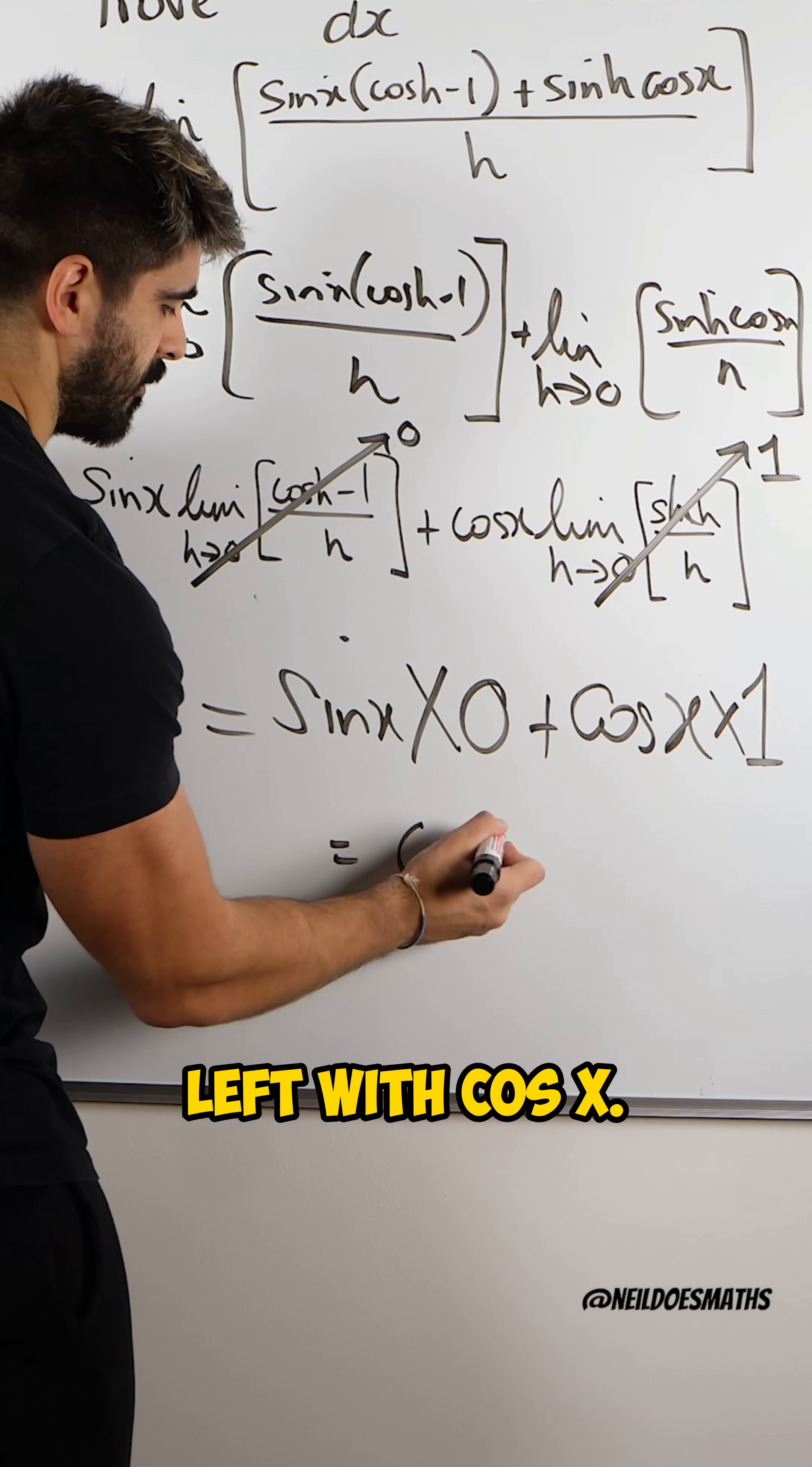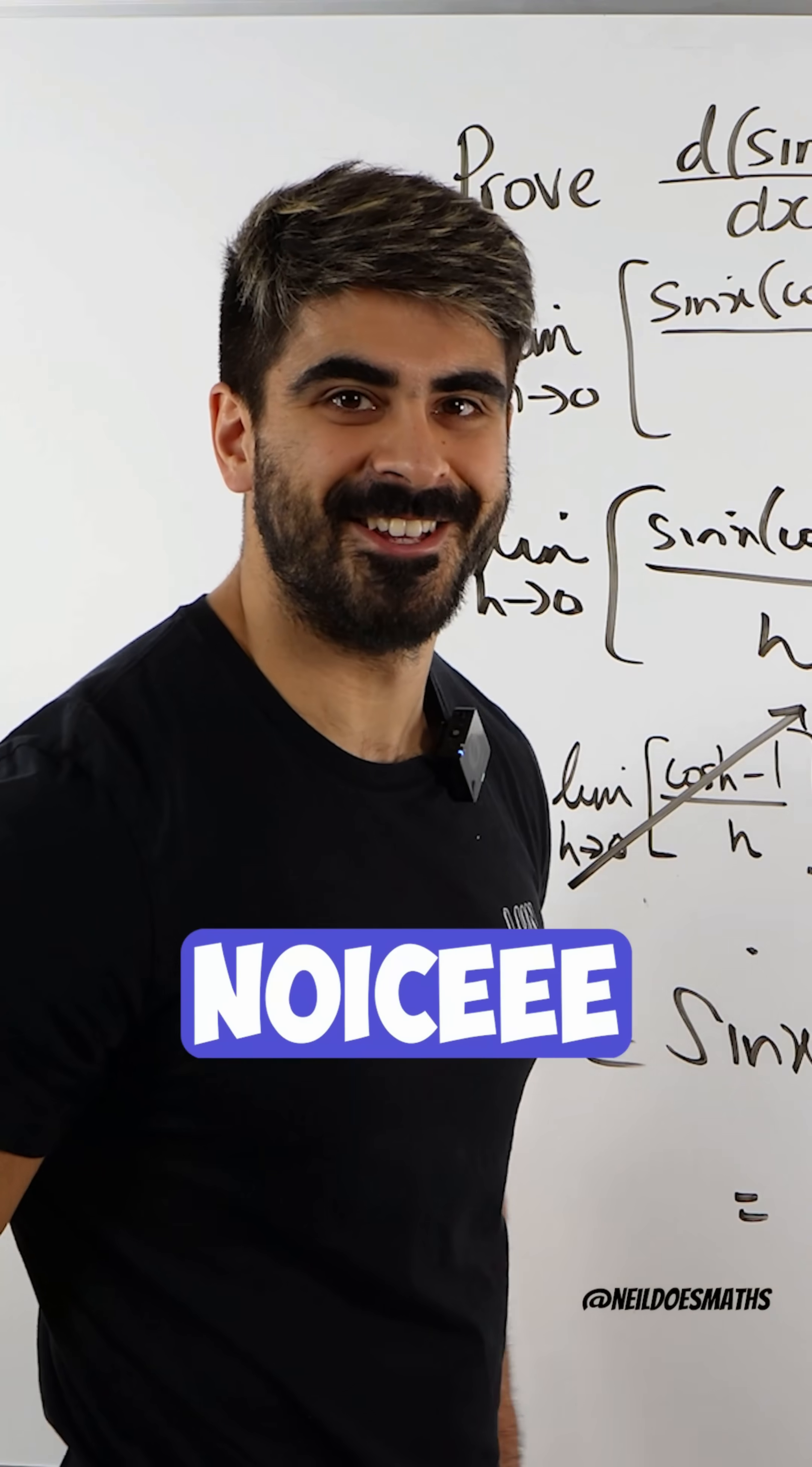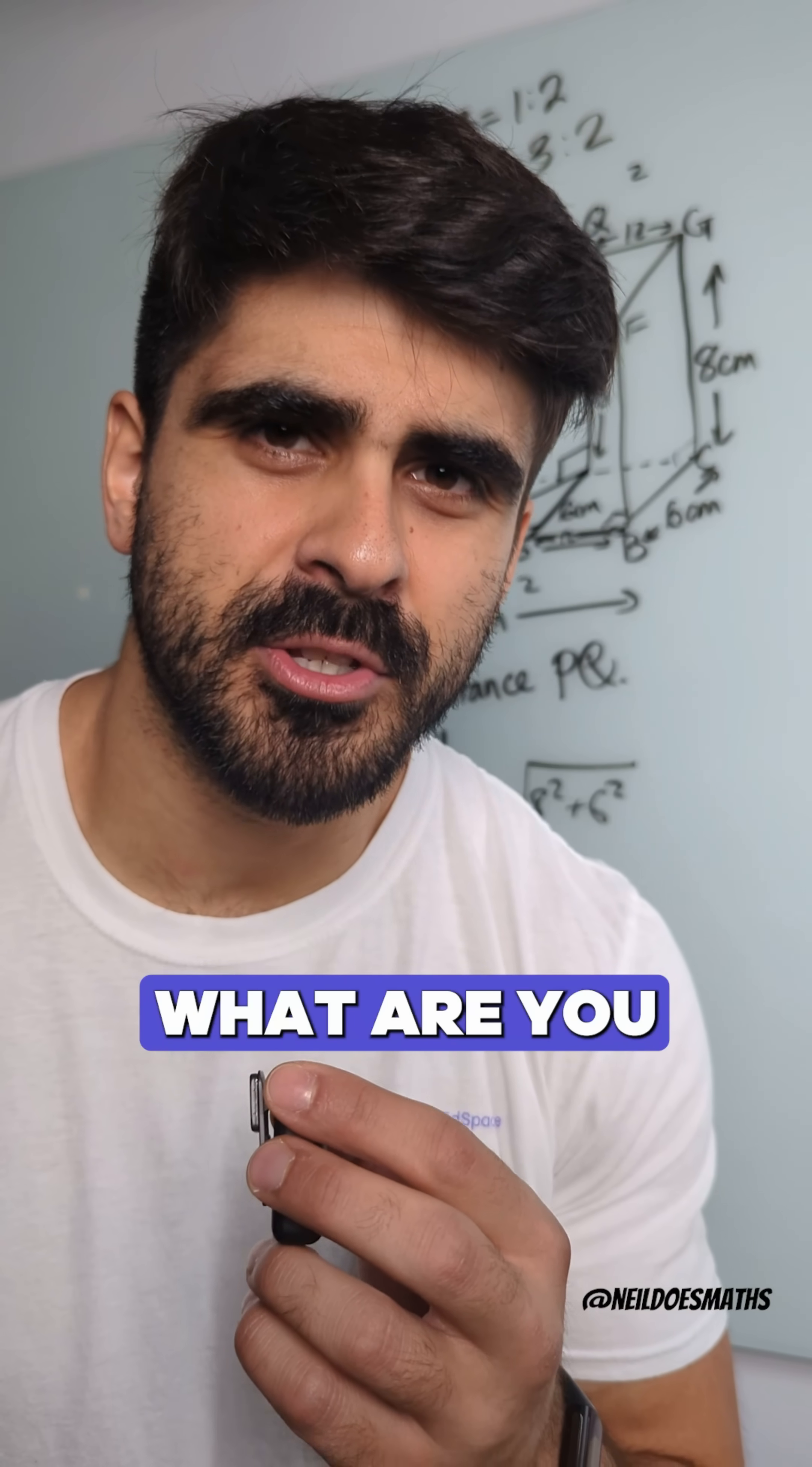So we are basically left with sin(x) times zero plus cos(x) times one. That is zero. And we are left with cos(x). And that is a beautiful proof. You still haven't hit the like button? What are you doing?